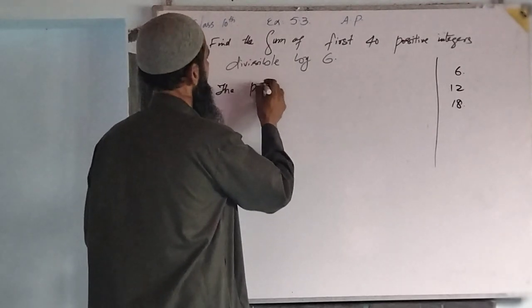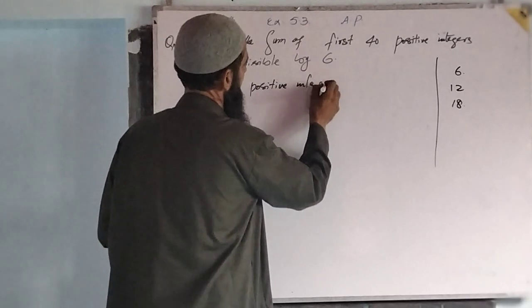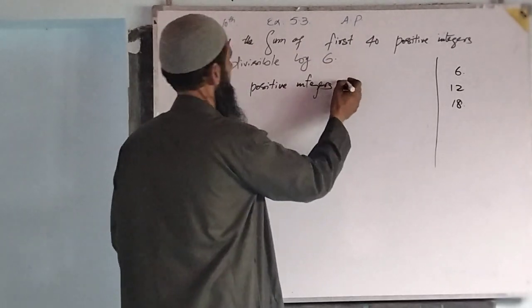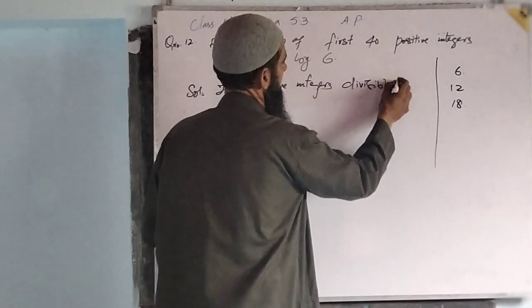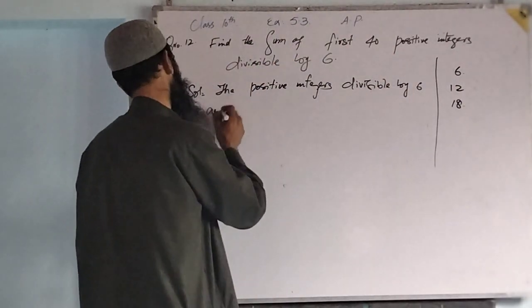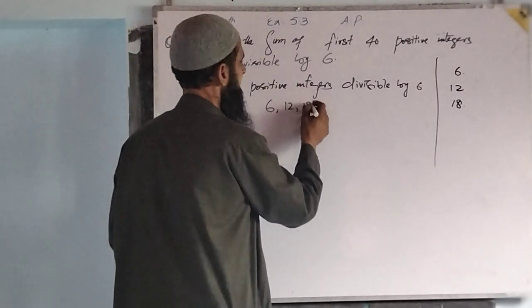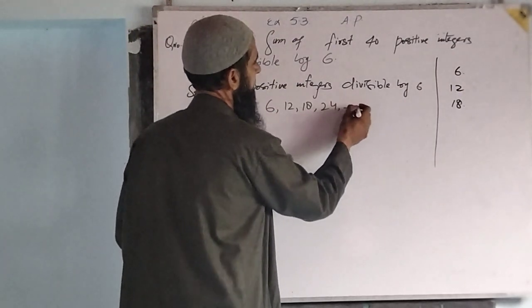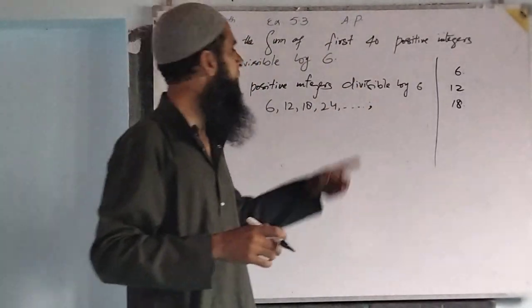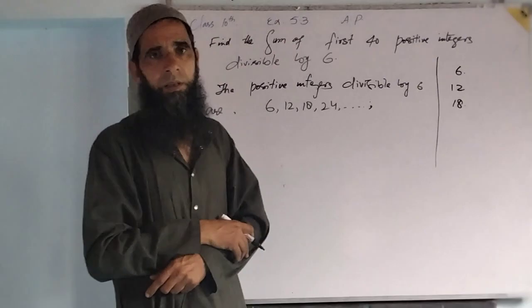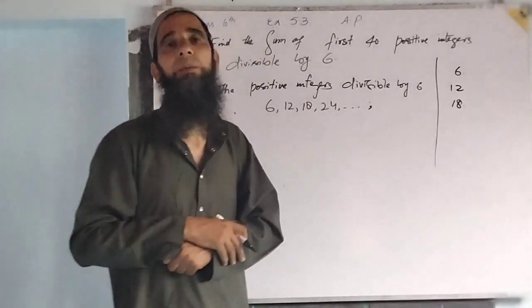Positive integers divisible by 6 are 6, 12, 18, 24 and so on. These are the numbers up to 40 terms. Dear students, we have to find sum of these 40 terms of the given arithmetic progression.